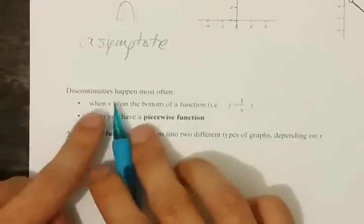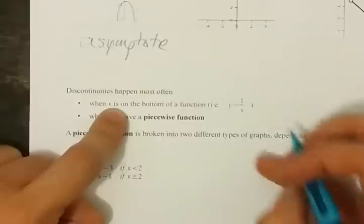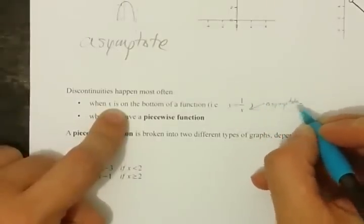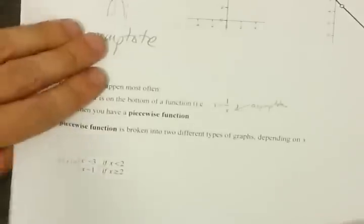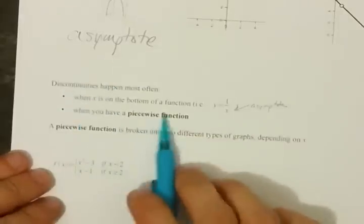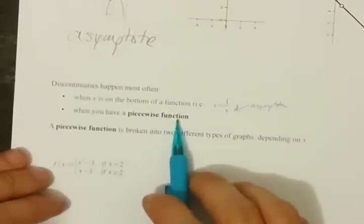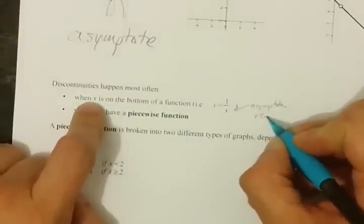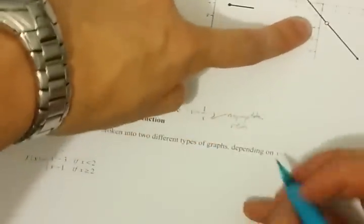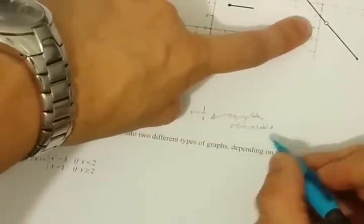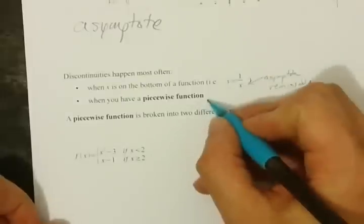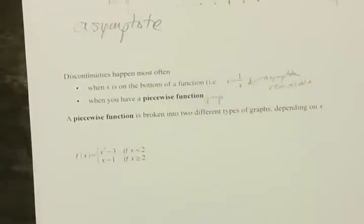Discontinuities happen most often when x is on the bottom of a function, which is what results in an asymptote — an infinite discontinuity. When x is on the bottom of a function, you can also get removable or hole discontinuities. This lesson is about piecewise functions and continuity, and piecewise functions are the ones that result in jump discontinuities.